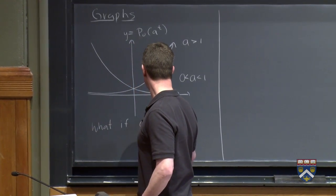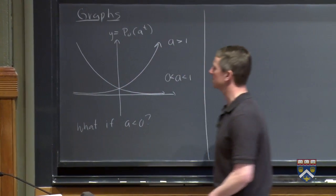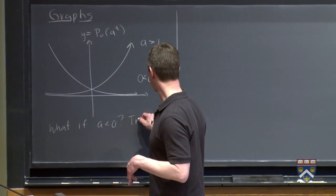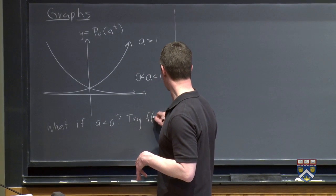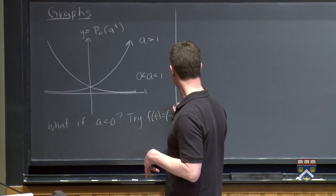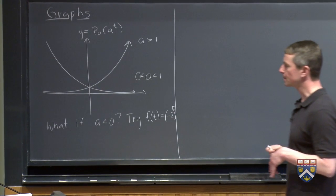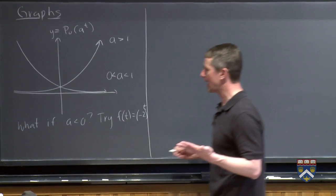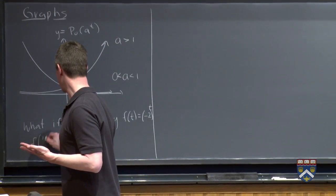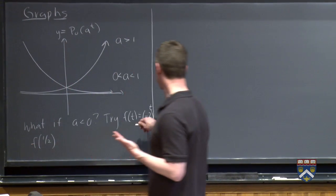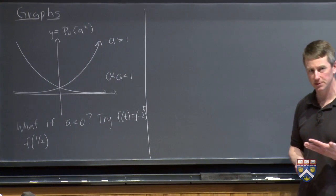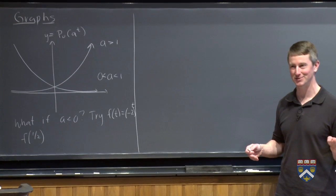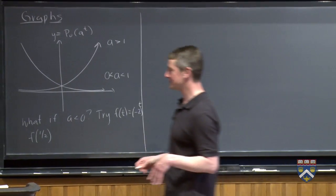What happens if a is negative? So let's just suppose a were, say, negative 2. So let's try f(t) equals negative 2 to the t. What would happen if I tried to evaluate this at 1 half? f(1/2) means that I'm supposed to be taking the square root of a negative number. And this is real valued calculus. We're not allowed to use imaginary numbers. So this doesn't exist.